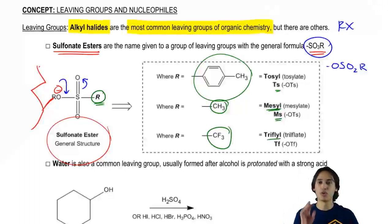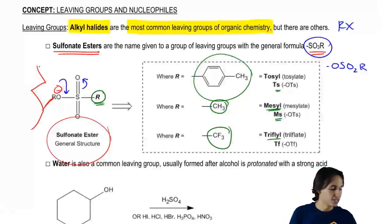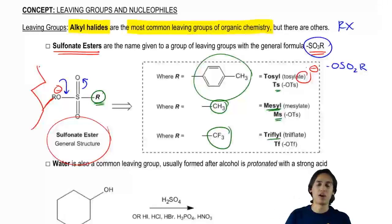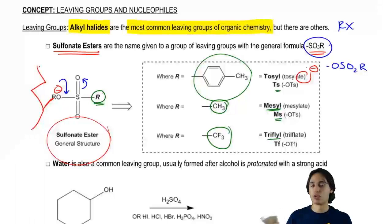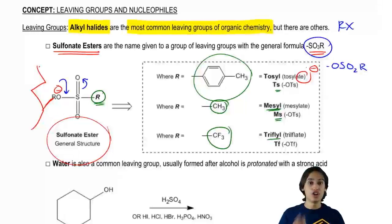You might wonder when to use 'tosyl' versus 'tosylate' — the '-ate' ending just means there's a negative charge, which is a common naming convention in chemistry. The key point is I don't need you to memorize exactly each sulfonate ester or draw it from scratch. What I do want you to be able to do is recognize that if you see abbreviations like OTS or OMS, you know that this is a sulfonate ester and therefore a really good leaving group.